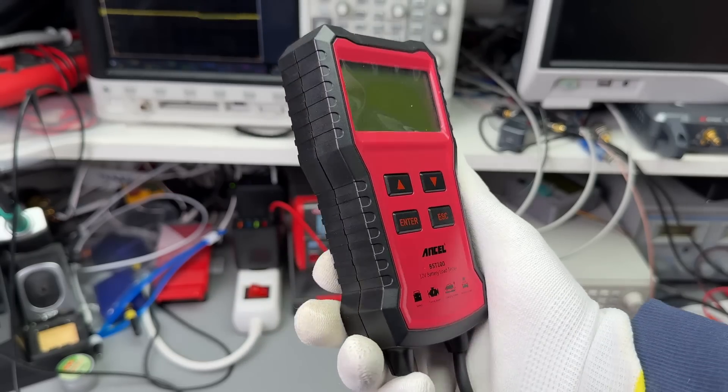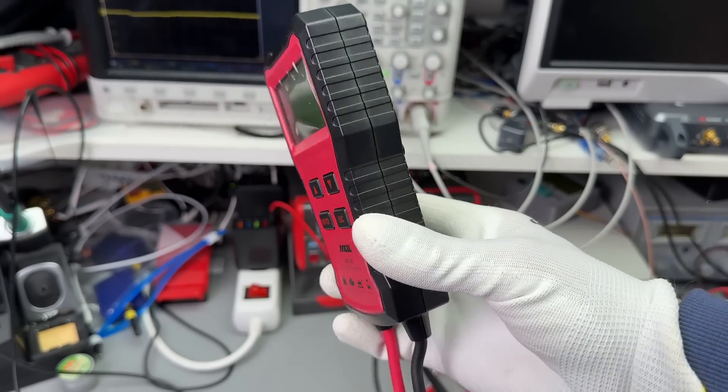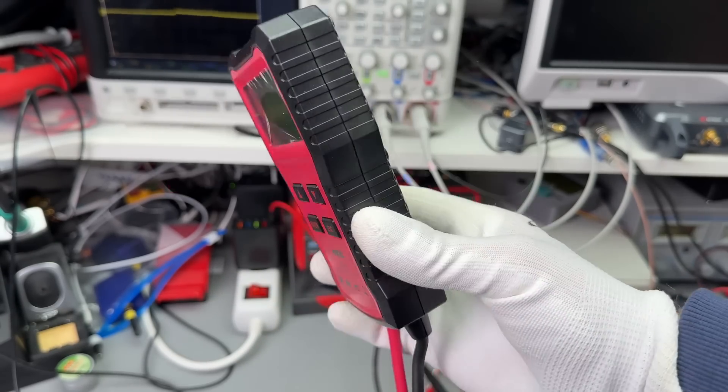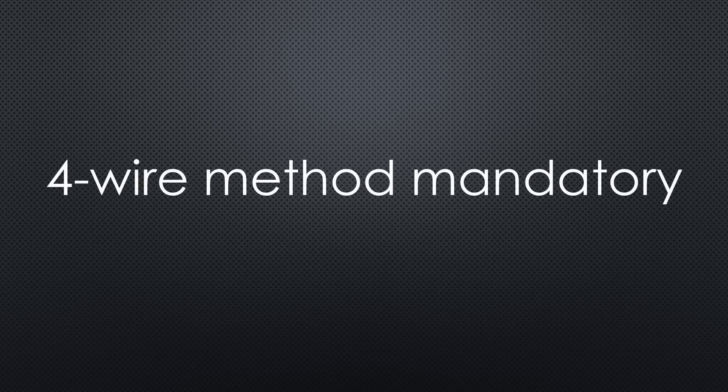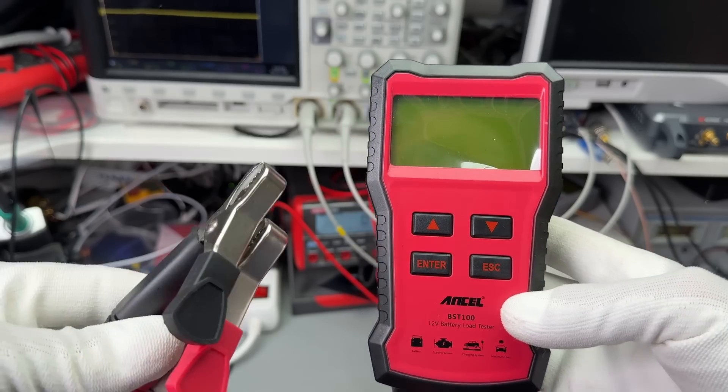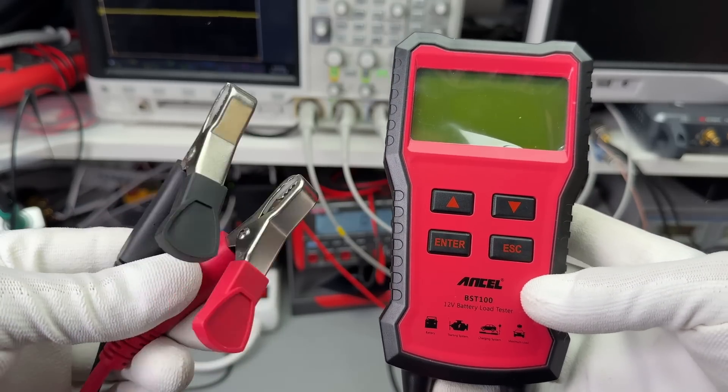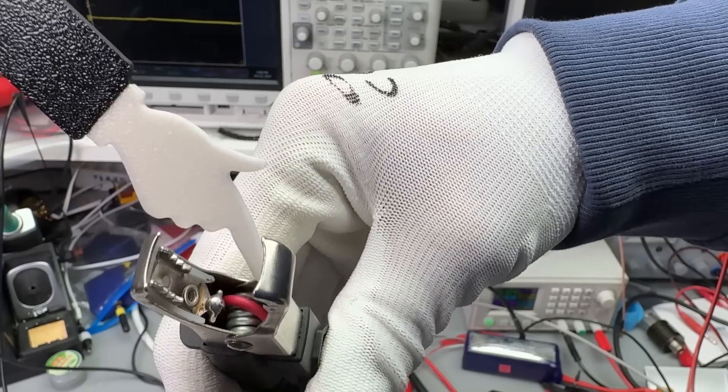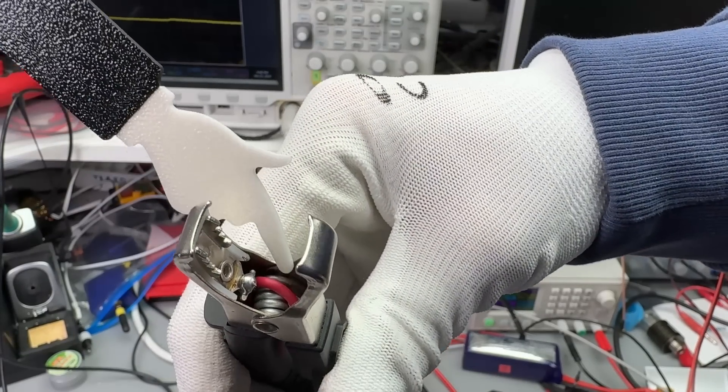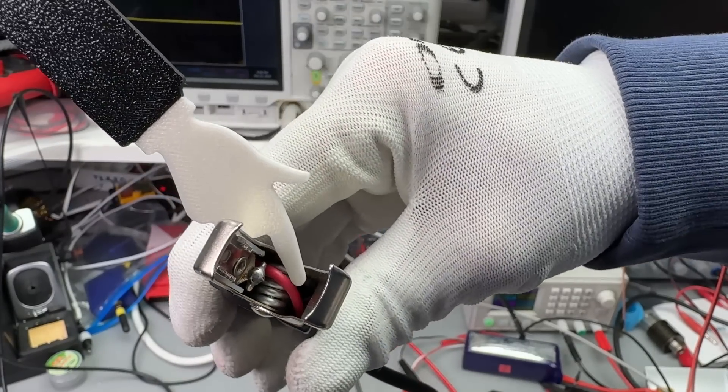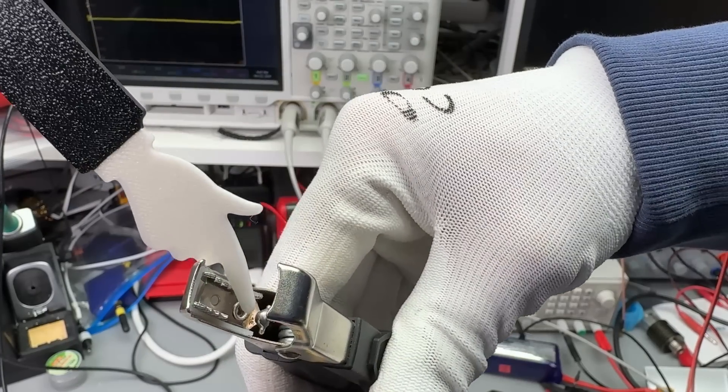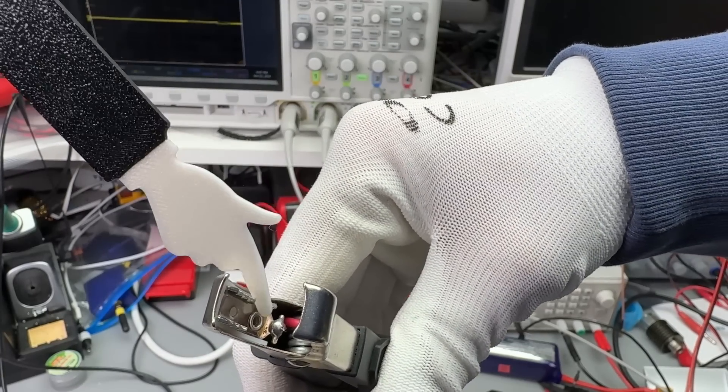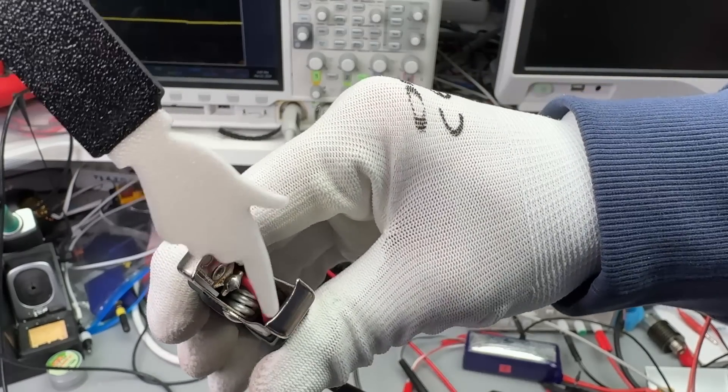However, for more potent 12 volt car batteries, you get different instruments that use a higher current. Here, the 4-wire method is even more important. But they only have two clamps. Fake? Fortunately not. Looking closely, we see that two wires are placed inside each clamp. One is connected to this and the second is connected to the other side. A simple and cheap 4-wire technique.